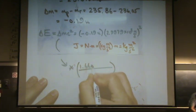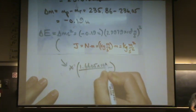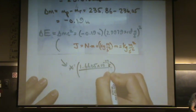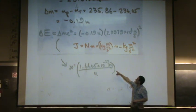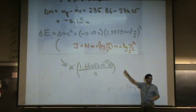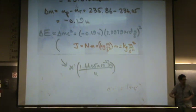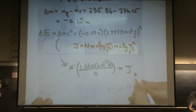1.6605 times 10 to the minus 27 kilograms per u. Okay, so I'm converting that u up there to kilograms. This will give me kilograms, meters squared per second squared. Now I'll have units that are in joules.